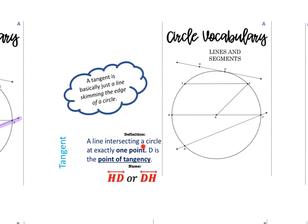The last word for lines and segments is tangent. A tangent is a line that intersects a circle at exactly one point. We would call that point the point of tangency. Looking at our diagram, HD is a line that intersects the circle at exactly one point, which is point D. So D is the point of tangency and HD is our tangent line. A tangent line just skims the edge of a circle — it touches your circle, your chord is contained, and your secant line slices.